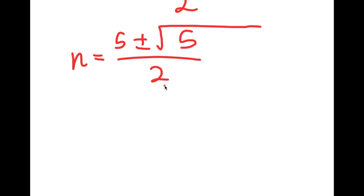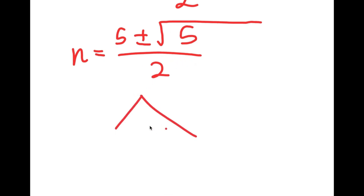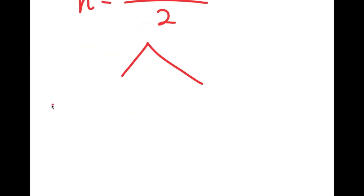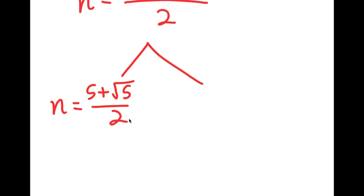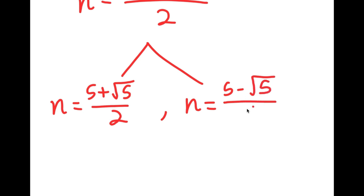This can't be simplified anymore, so n equals 5 plus or minus the square root of 5 over 2, which gives two solutions: n1 is equal to 5 plus the square root of 5 over 2, and n2 is equal to 5 minus the square root of 5 over 2.